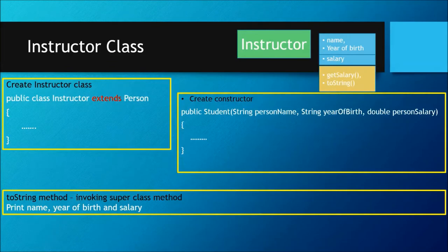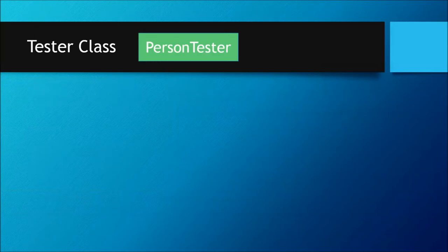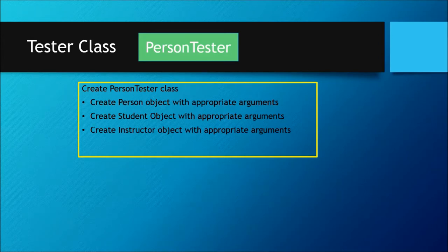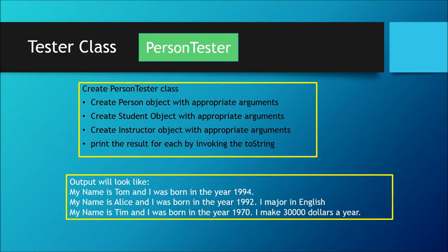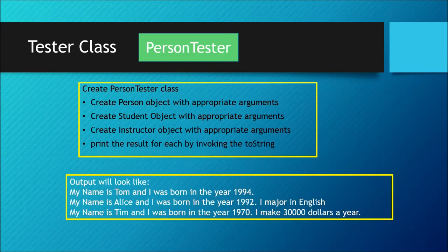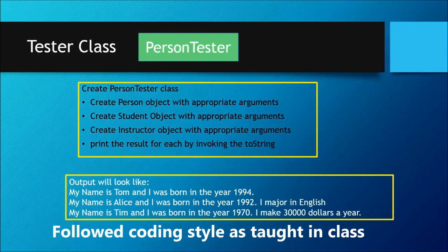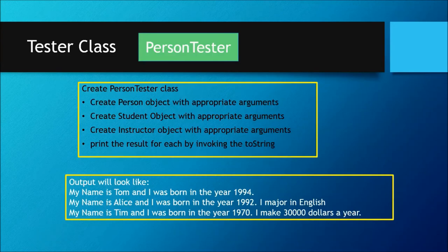Once you are done creating your Student and Instructor classes, you will test them. Create a PersonTester class, create a Person object with appropriate arguments, a Student object with appropriate arguments, and an Instructor object with appropriate arguments. Print the result for each by invoking the toString method. When done, your output should show three statements: Person prints name and year, Student adds major, Instructor adds salary. Make sure you have Javadocs in all classes and each method has documentation. Then turn in your program for grading.